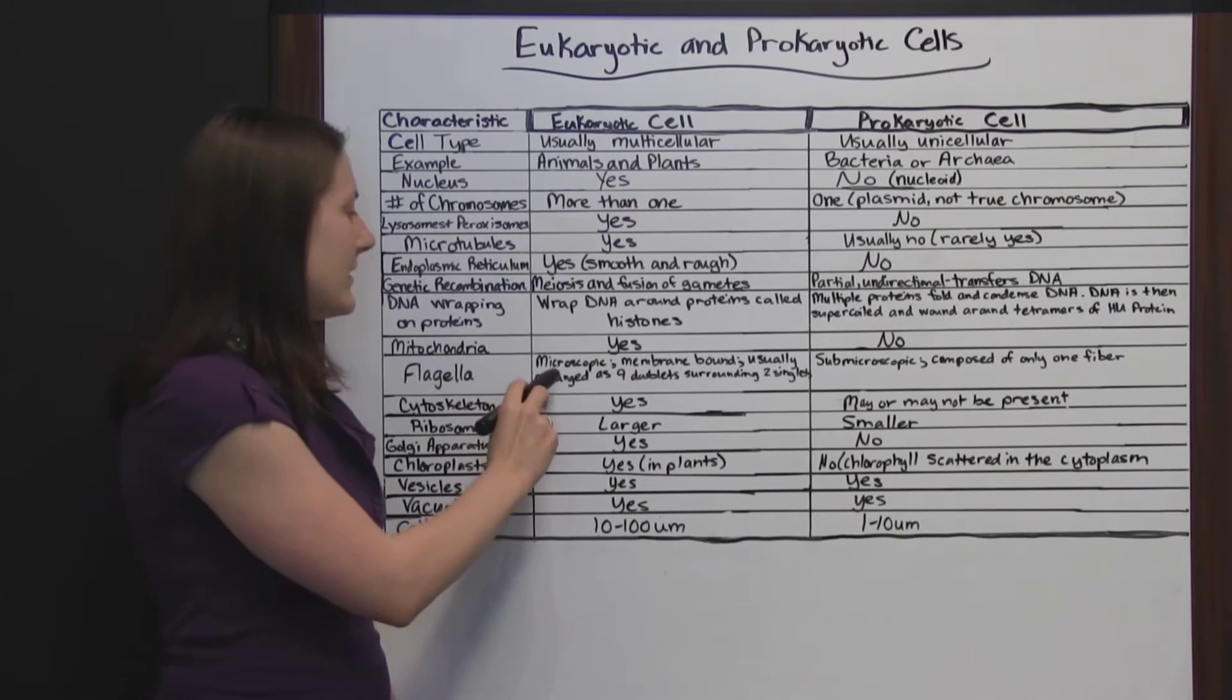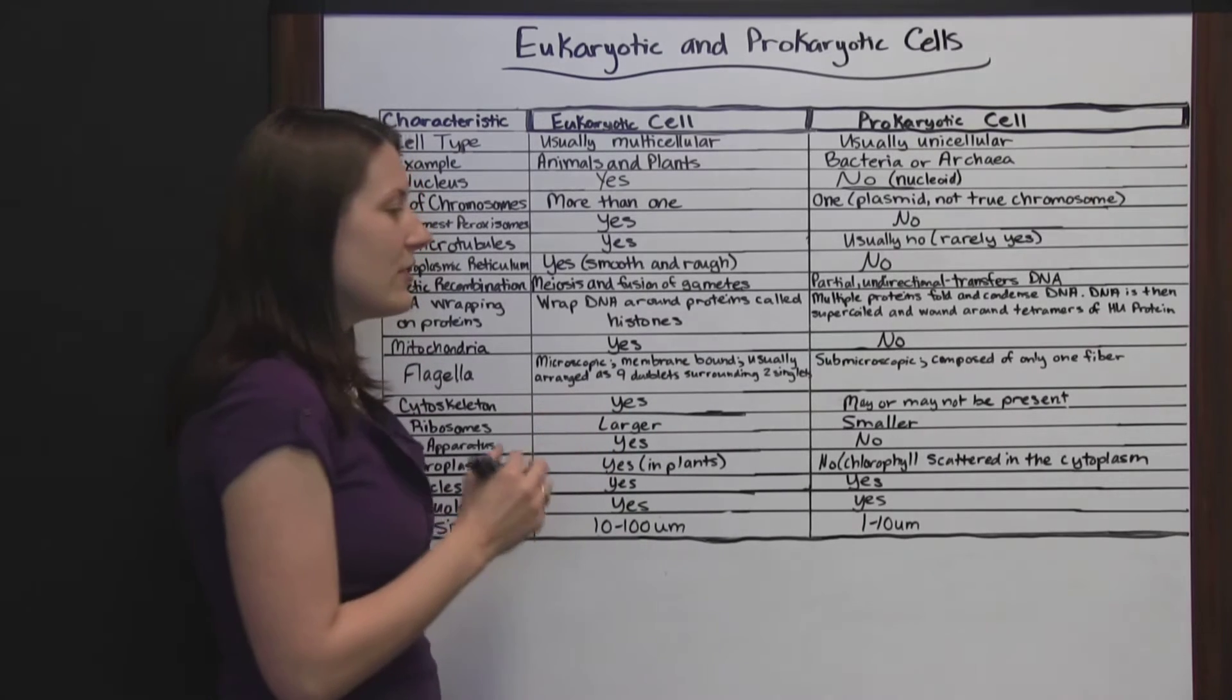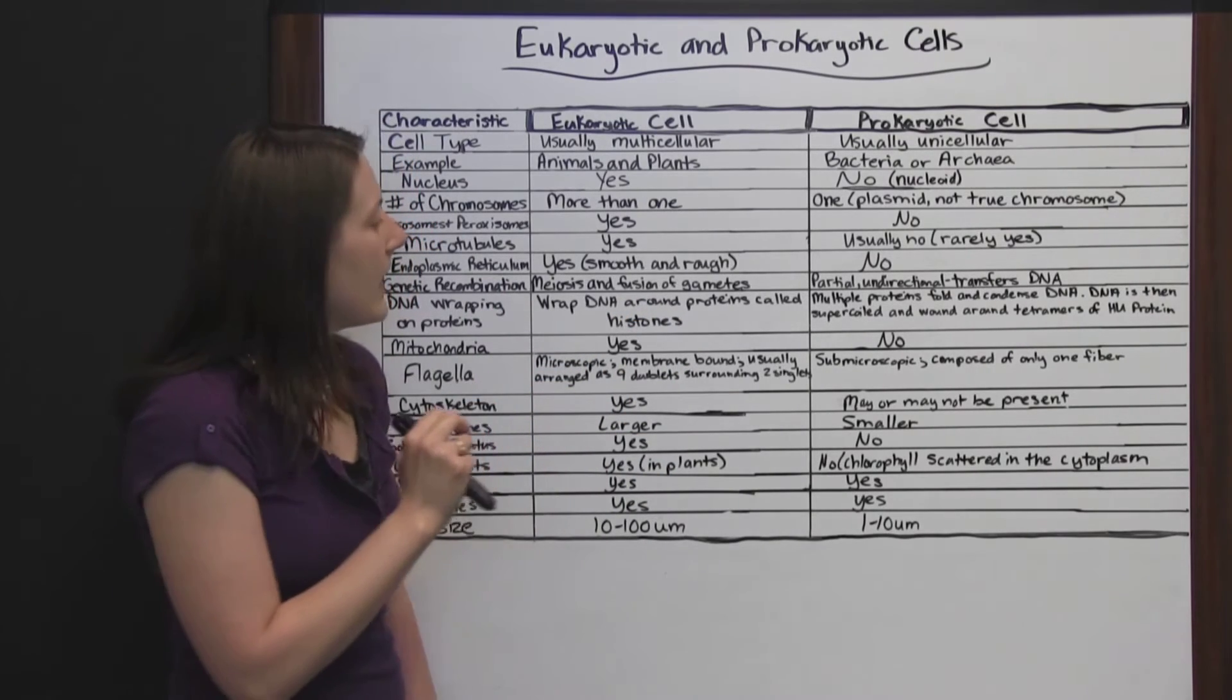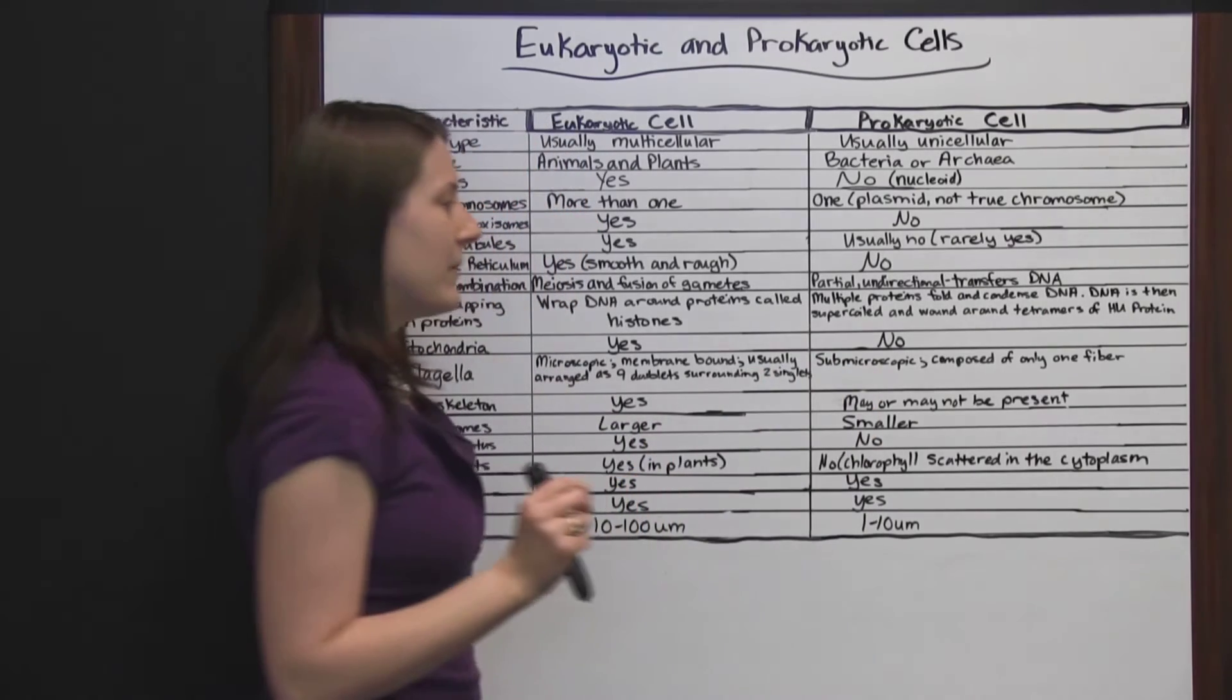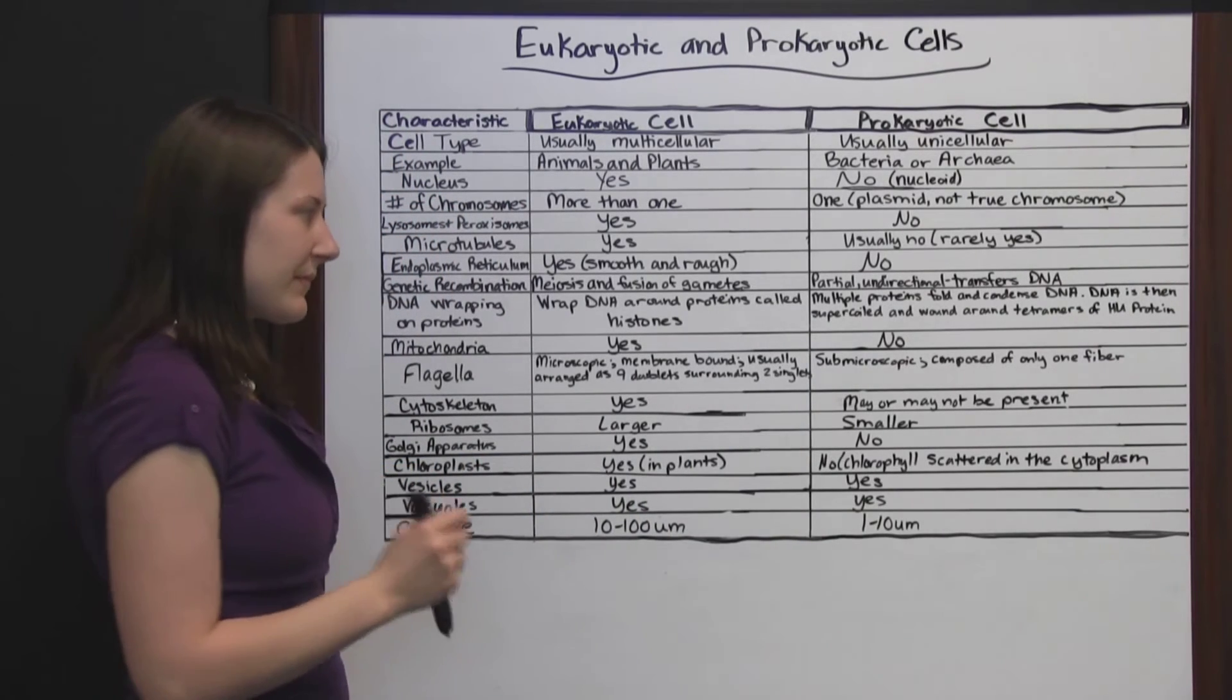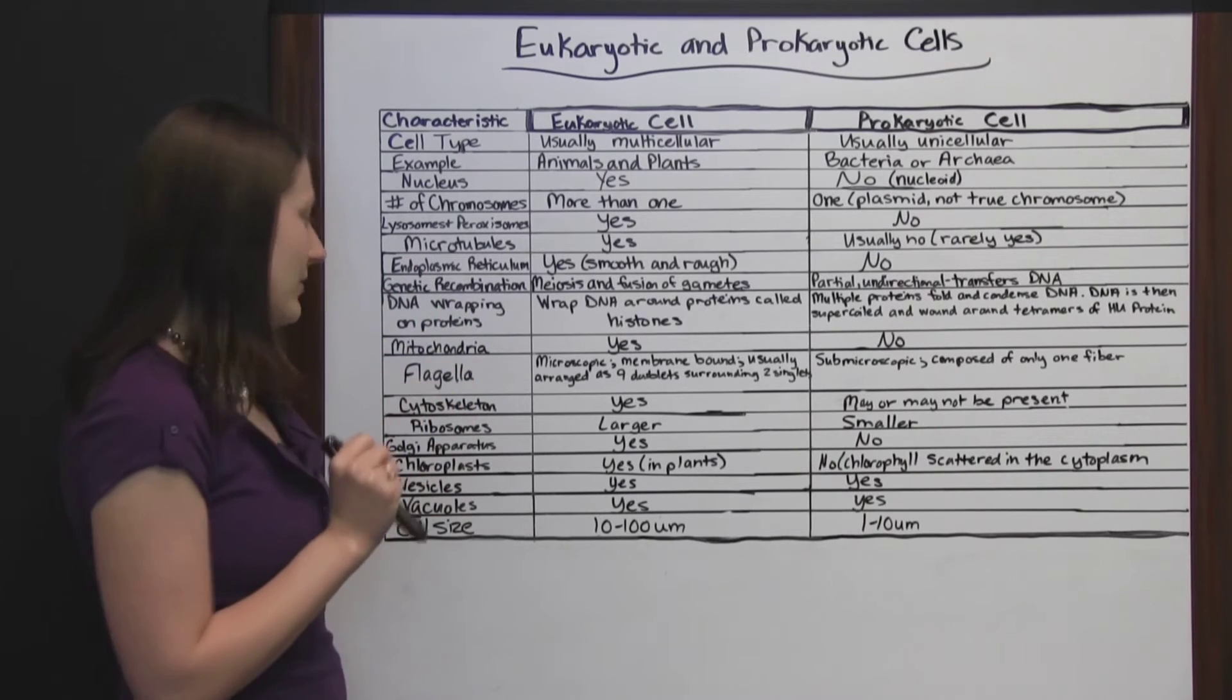Flagella. These are microscopic on eukaryotic cells. They're membrane bound and they are usually arranged as nine doublets, so nine little pairs of flagella surrounding two singlets. On prokaryotic cells, they are submicroscopic. Even with a normal microscope, you wouldn't be able to see them. They're composed of only one fiber, where this one has nine sets of little fibers surrounding two singlets.